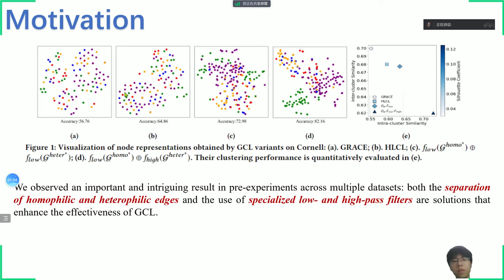In our exploration, we made a significant discovery through wide-ranging experiments across multiple datasets. The separation of homophilic and heterophilic edges, along with the utilization of spatial low- and high-pass filters, significantly enhances the effectiveness of Graph Contrastive Learning. Welcome everyone to read our work for specific details. Thank you.